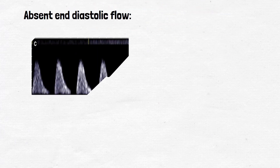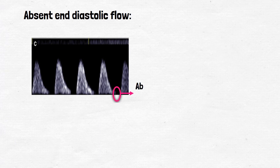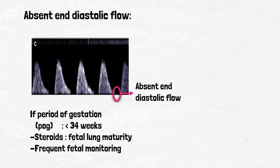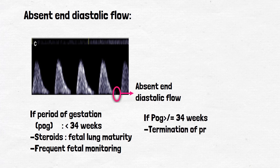For absent end diastolic flow, if the period of gestation is less than 34 weeks, management involves steroids for fetal lung maturity and frequent fetal monitoring. If it crosses 34 weeks, it is better to do termination of pregnancy.